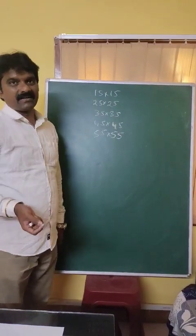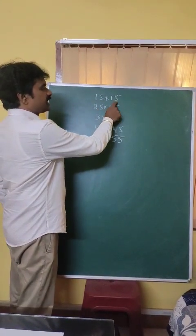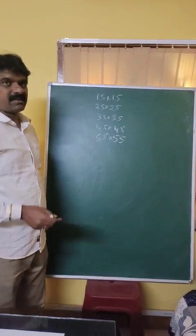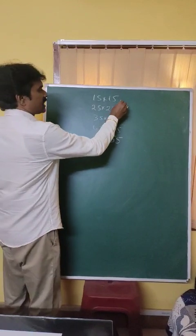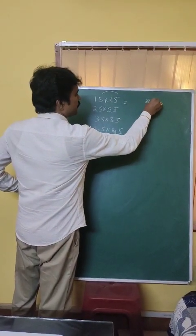So what is the trick to make this multiplication with the same numbers which ends with 5? Is it clear? So step number 1. Understand this: 5 into 5, 25. Everybody knows that.